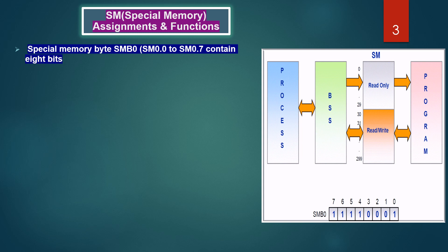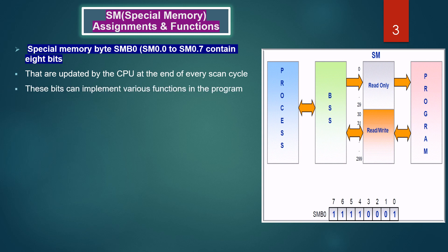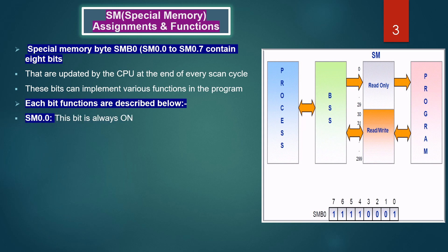In this slide we are going to discuss the special memory bytes. The special memory bytes start from SM 0.0 to SM 0.7, which contain 8 bits that are updated by the S7-200 CPU at the end of every scan cycle. With these bits you can implement various functions in your program. SM 0.0: this bit is always on.